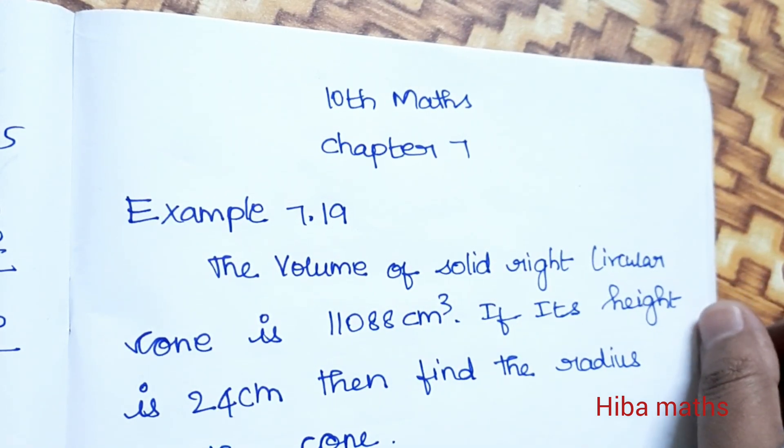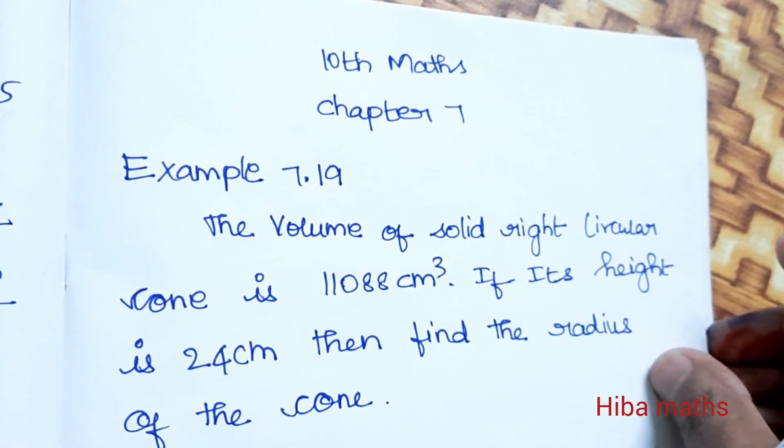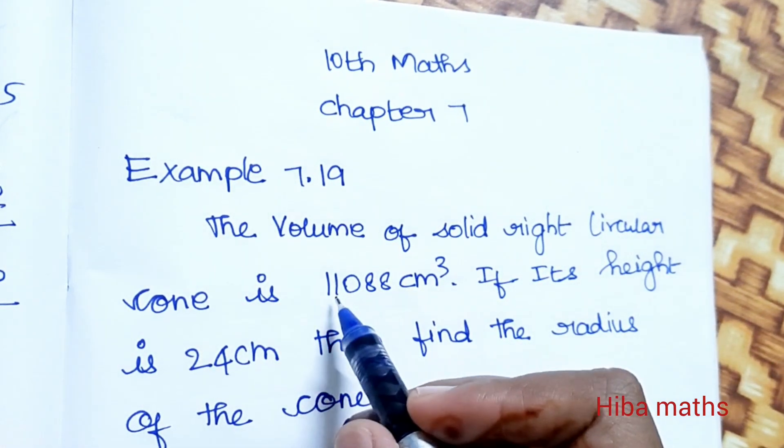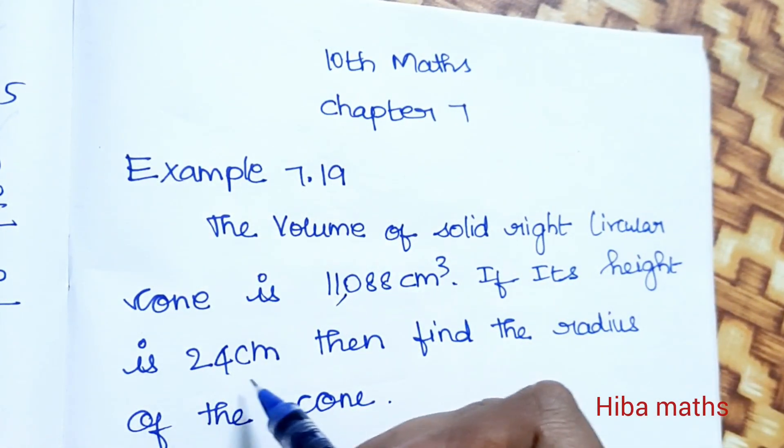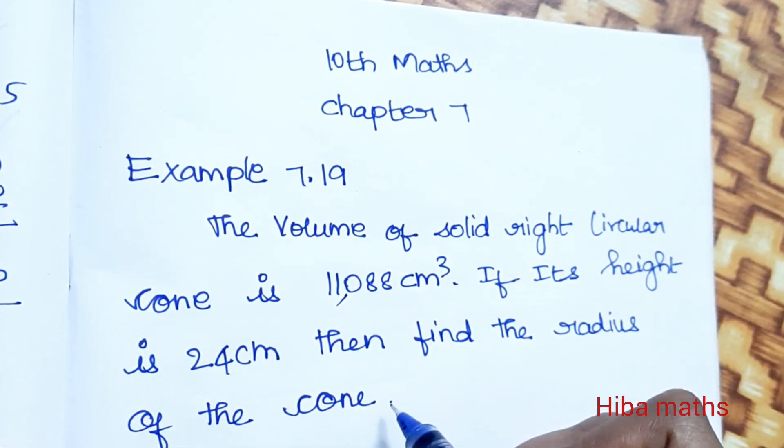Hello students, welcome to Hiba Maths 10th Standard Maths Chapter 7, Example 7.19. The volume of a solid right circular cone is 11,088 cm³. If its height is 24 cm, then find the radius of the cone.